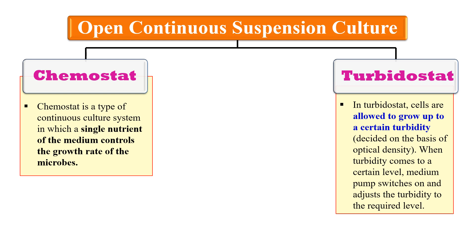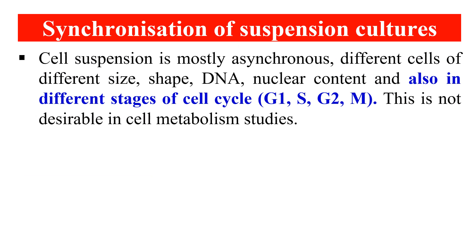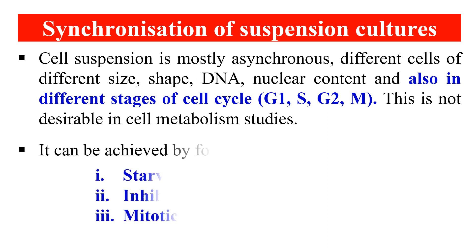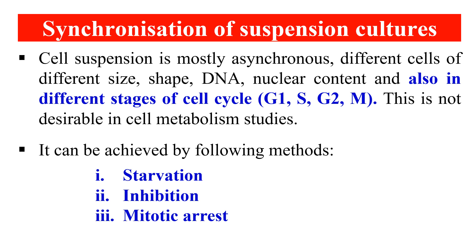Now, synchronization of suspension culture. In suspension culture, different cells will be at different states — different size, shape, nuclear content — and at different stages of the cell cycle: some at G1, some at S phase, some at G2, and some at M phase. These cells are asynchronous. We need to synchronize them so they move to a specific stage of the cell cycle simultaneously. Methods include starvation, inhibition, and mitotic arrest.